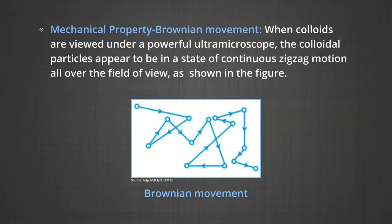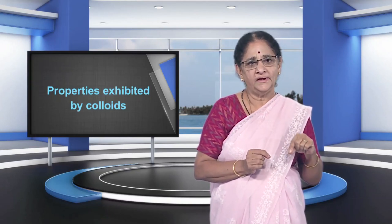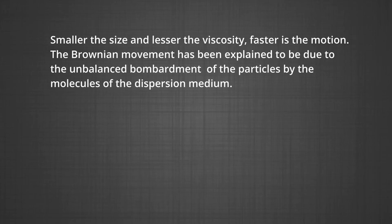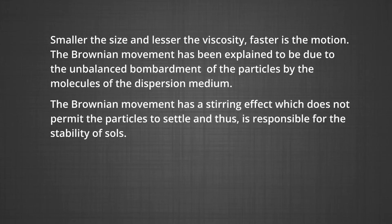Number four, mechanical property: Brownian movement. When colloids are viewed under a powerful ultra microscope, the colloidal particles appear to be in a state of continuous zigzag motion all over the field of view, as shown in the figure. This motion was first observed by the British botanist Robert Brown and is known as Brownian movement. This motion is independent of the nature of the colloid, but depends upon the size of the particles and viscosity of the solution. Smaller the size and lesser the viscosity, faster is the motion. Brownian movement is due to the unbalanced bombardment of the particles by the molecules of the dispersion medium, and has a stirring effect which prevents the particles from settling, thus responsible for the stability of the sol.